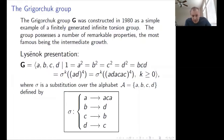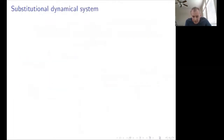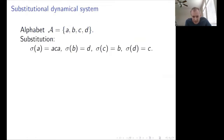Now let's concentrate on this substitution: A goes to ACA, B to D, C to B, D to C. Once we have a substitution, there is a certain machinery developed in topological dynamics called a substitutional dynamical system. The general setup: we have a finite alphabet and a substitution, which is a map from that set to the set of finite words over that alphabet. It extends to an action on finite words by applying the substitution separately to each letter, and also to infinite words.